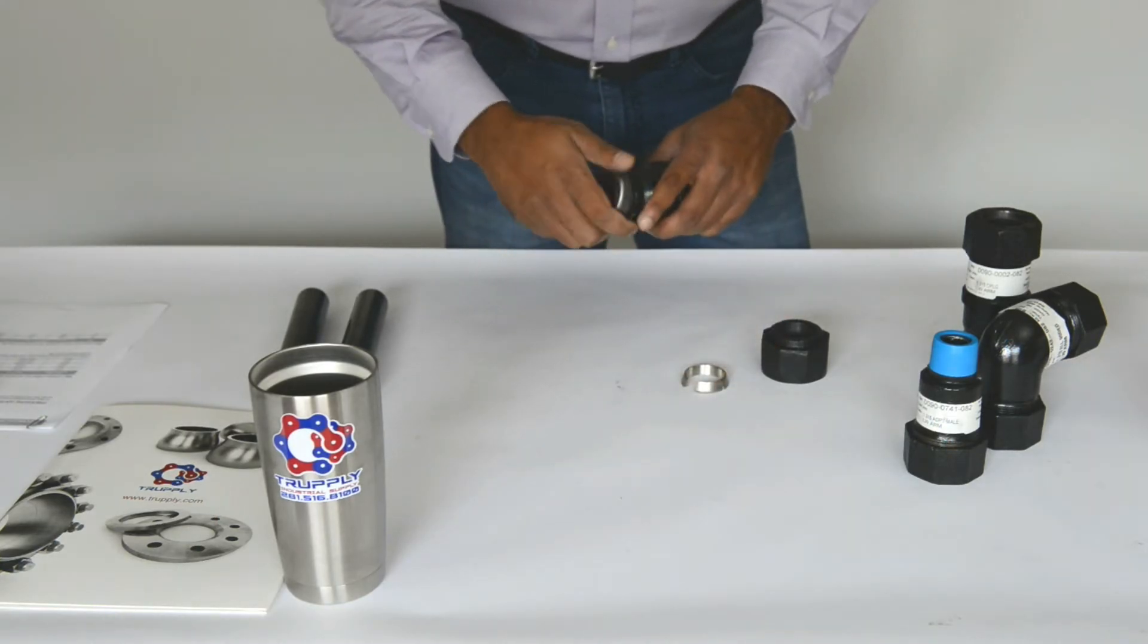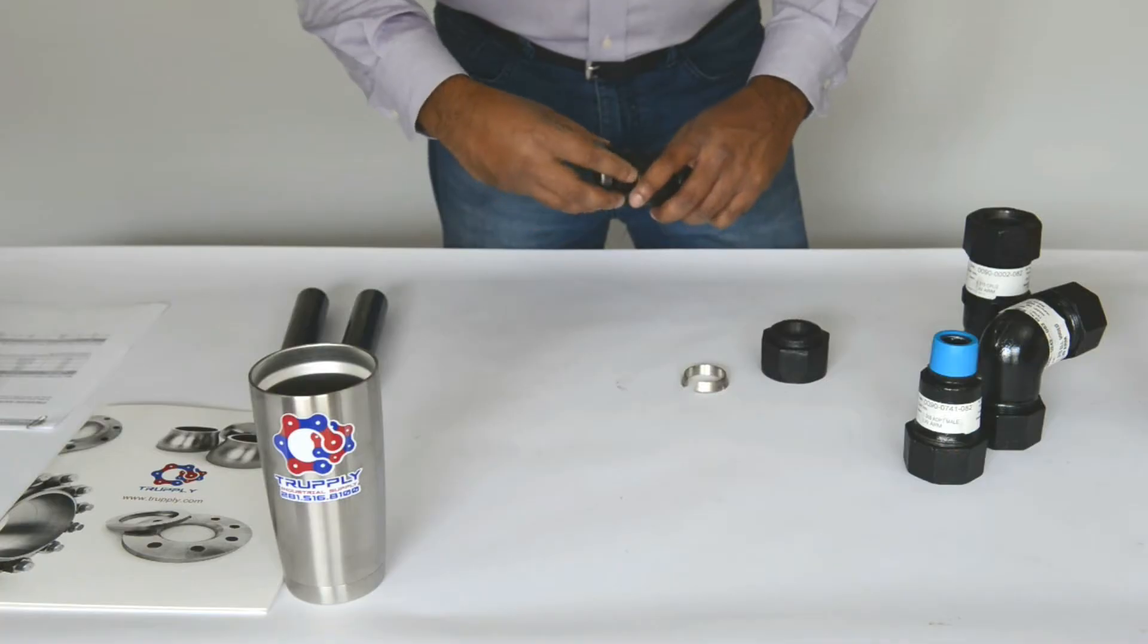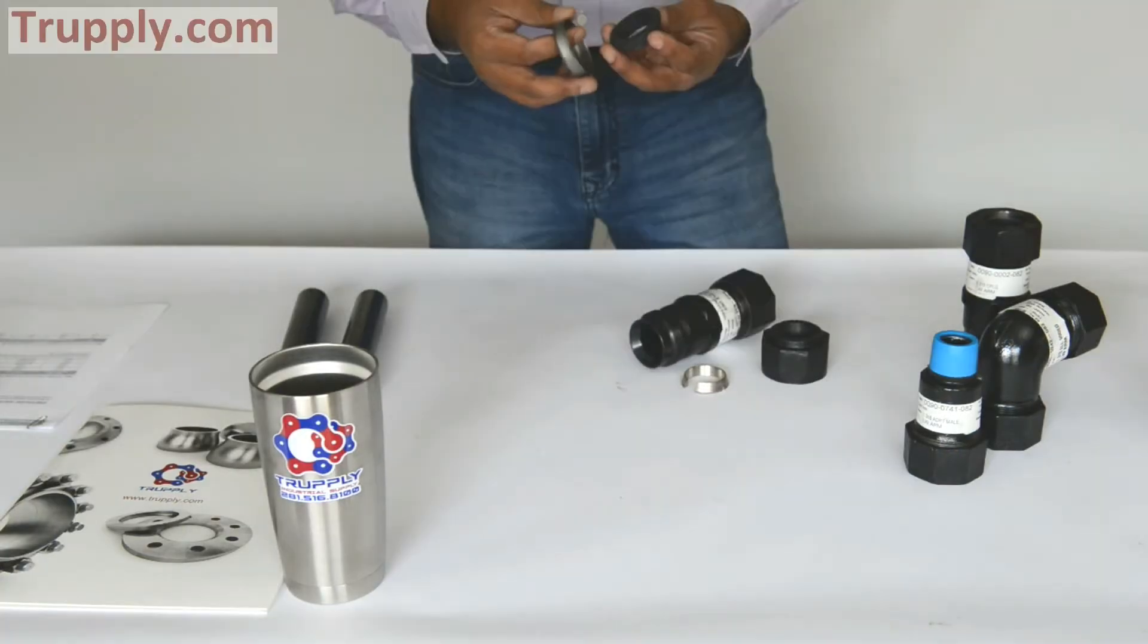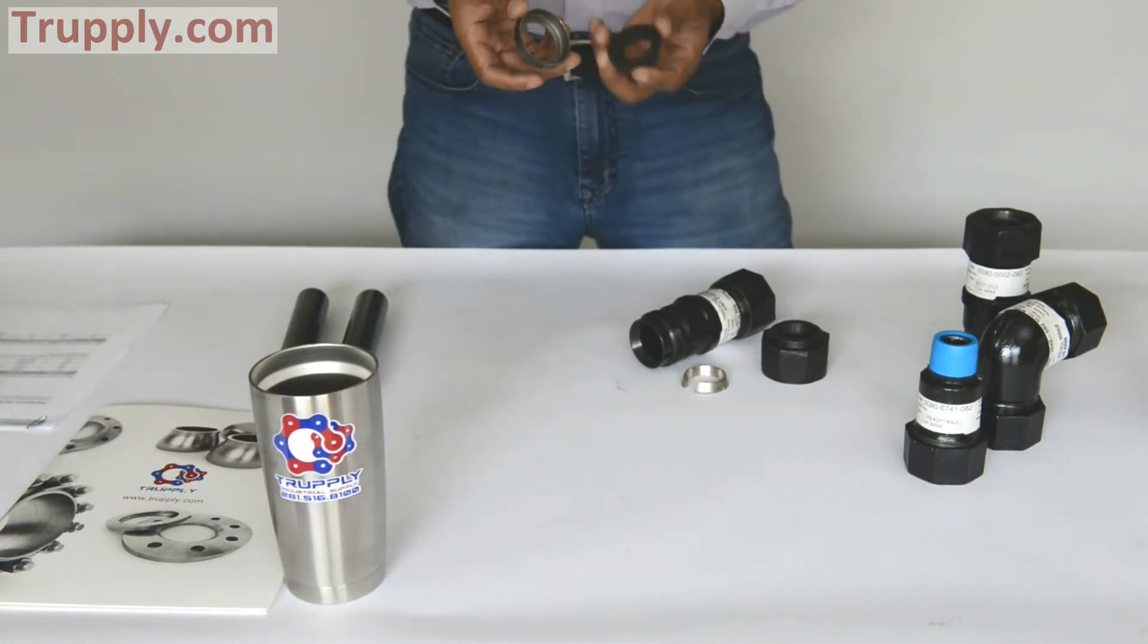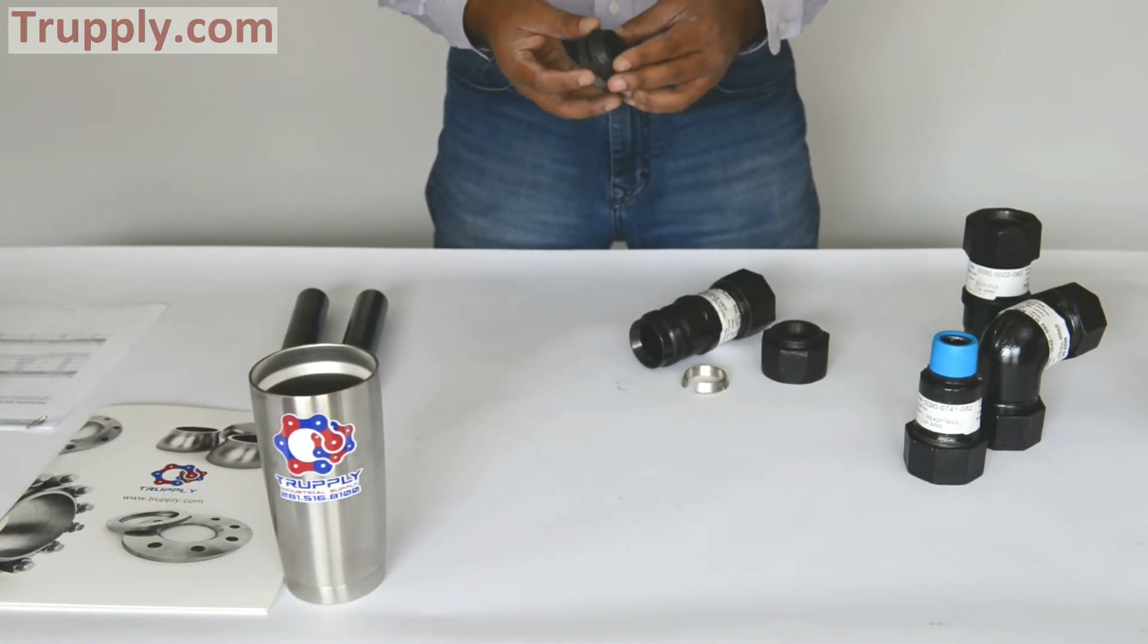The other end is pretty much similar, it has a gasket. In fact, this gasket is interchangeable with Style 38 coupling gasket. So it's a much bigger gasket.